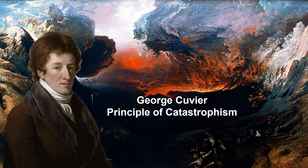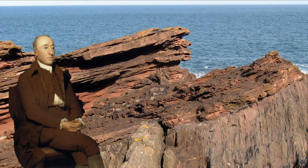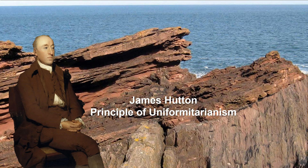Because everything was created by catastrophic events — mountains are a violent, quick process; river channels are a violent, quick process. All the landscapes seen across the globe are a result of catastrophic events. It wasn't until James Hutton, who is considered the father of modern geology, proposed his principle of uniformitarianism.